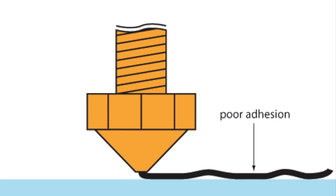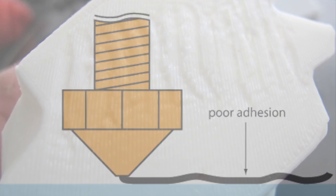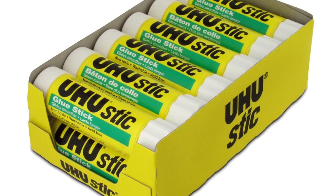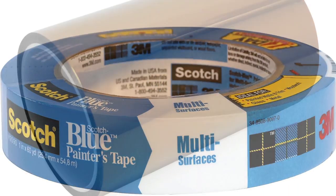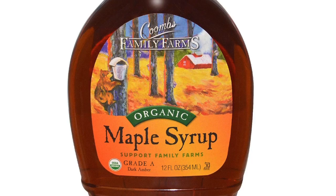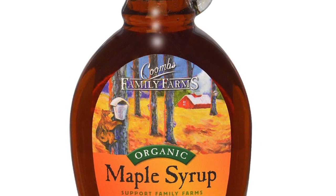It could also be that the filament just isn't able to stick to the bed. An effective and easy bed adhesive is simply glue sticks. Get either Elmer's Disappearing Purple or Uhu White. You can also use masking tape, Kapton tape, ABS slurry and also maple syrup. Yes, I'm serious, you can use maple syrup. It makes for some sweet prints.